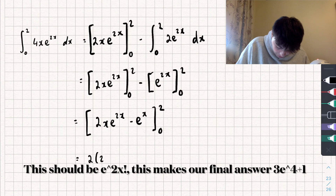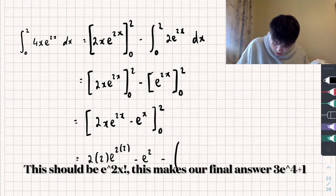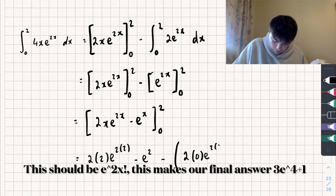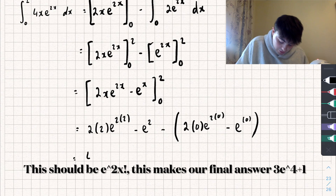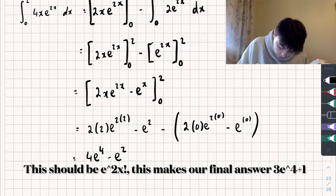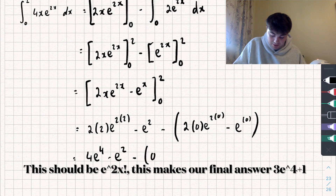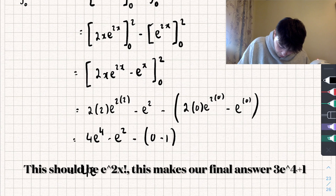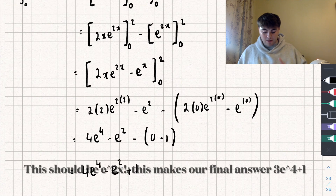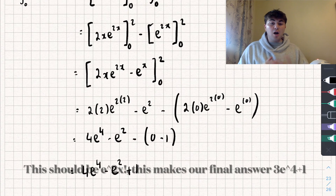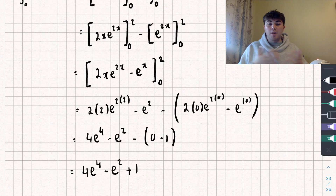Substituting in the upper limit first: 2 times 2 times e to the power of 4, subtract e to the power of 2. Then we subtract what happens when we substitute in zero: 2 times 0 times e to the power of 0, subtract e to the power of 0. That gives us 4 e to the power of 4, subtract e squared, subtract zero, subtract 1. So our final answer is 4 e to the power of 4, subtract e squared, plus 1. Hopefully these examples were useful — if they were, please like, subscribe and share, and go to my channel for more maths tutorials. Thanks for watching.